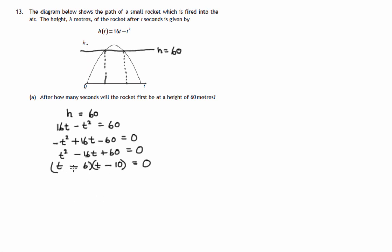This times this is zero, so the first factor could be zero or the second factor could be zero. If the first factor was zero then t would be 6. If the second factor was zero t would be 10. So it looks like we're getting sensible answers in that six seconds after this rocket was fired it's reached a height of 60, and then after it's reached its maximum it passes down through this height of 60 meters after 10 seconds.